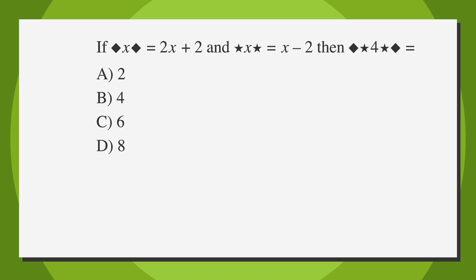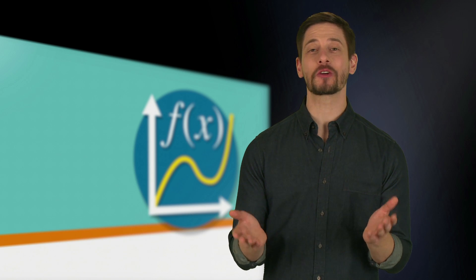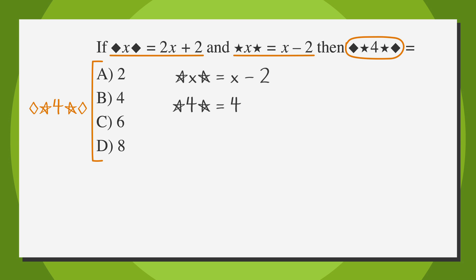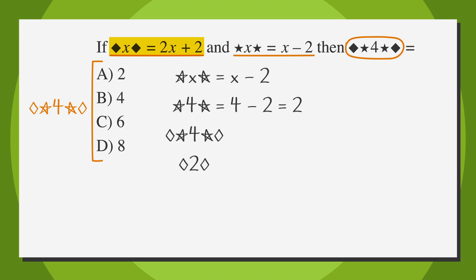And we're back. How was that one on your own? Let's work through this problem together to make sure we get the same answer. As always, we'll start by underlining the facts, circling the keywords, and labeling the answer choices. We know that star-x-star equals x minus 2, and if we look closely, we see that the question contains star-4-star. Star-4-star is in the same form as star-x-star, so let's start there. If star-x-star equals x minus 2, then star-4-star equals 4 minus 2, which equals 2. Now we can replace star-4-star with 2, so we're left with diamond-2-diamond. We see that diamond-x-diamond equals 2x plus 2, so diamond-2-diamond equals 2 times 2 plus 2, and that equals 6.